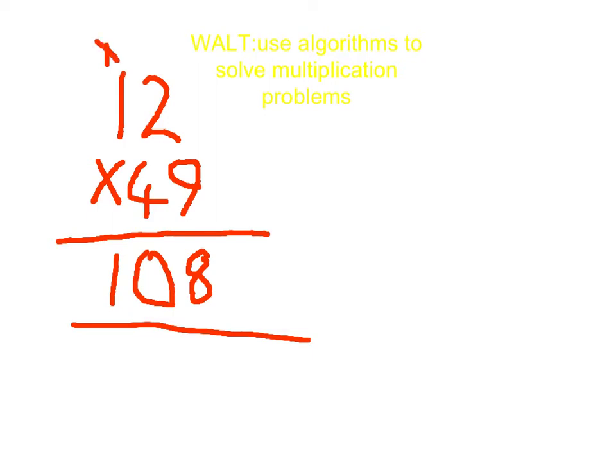Now you go 4 times 2 is 8. And you're in the 10s, so you need to put a 0 first. And then you go 8. And then you go 4 times 10 equals 400.